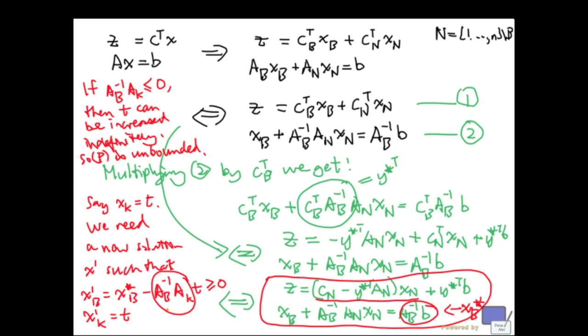So, what we end up with is, we still have a basic feasible solution X prime. Now, of course, the complication here is that, we might end up with the X prime having fewer than M positive components. And, that's, again, a situation that we said we will take care of later on.